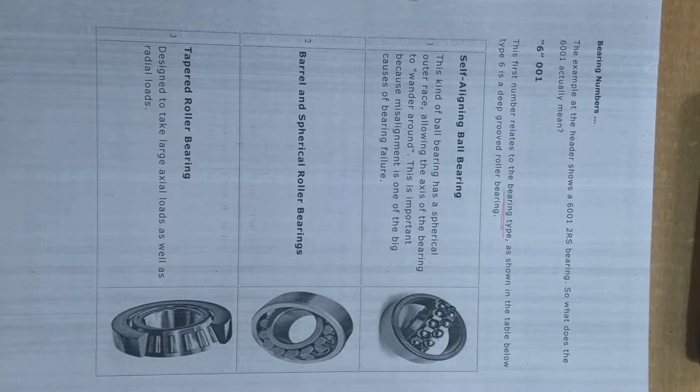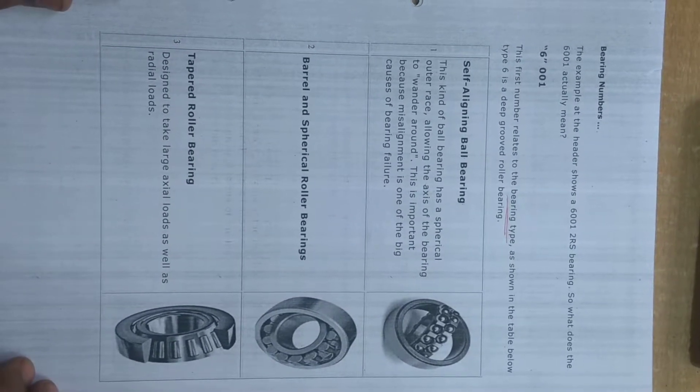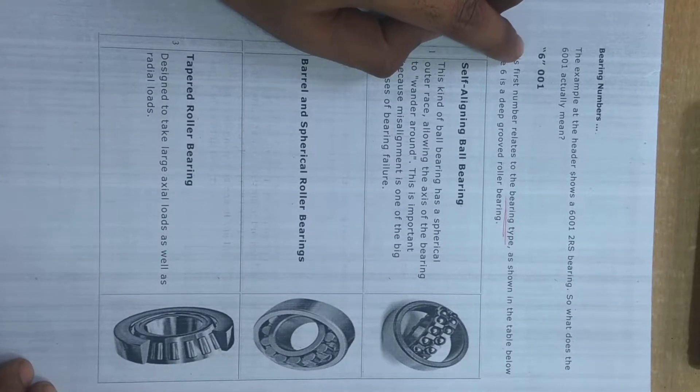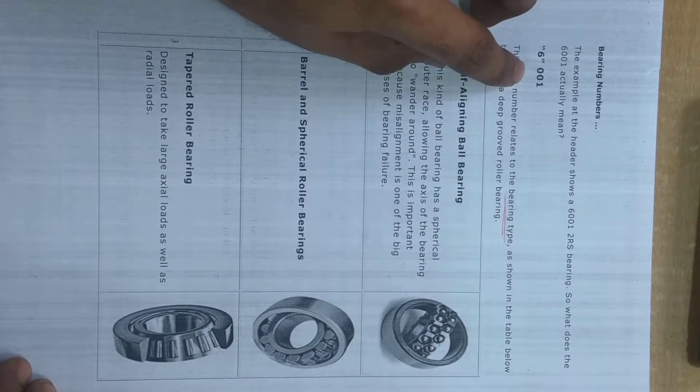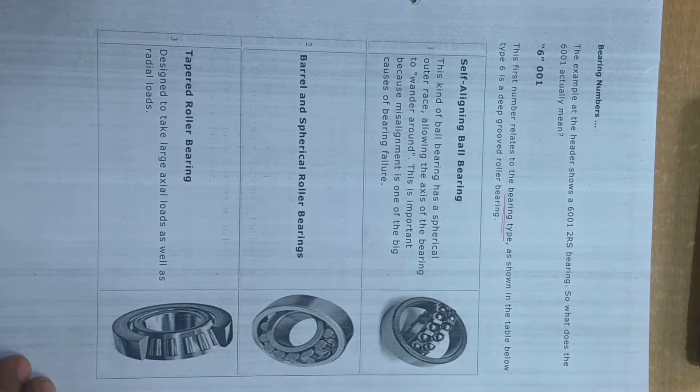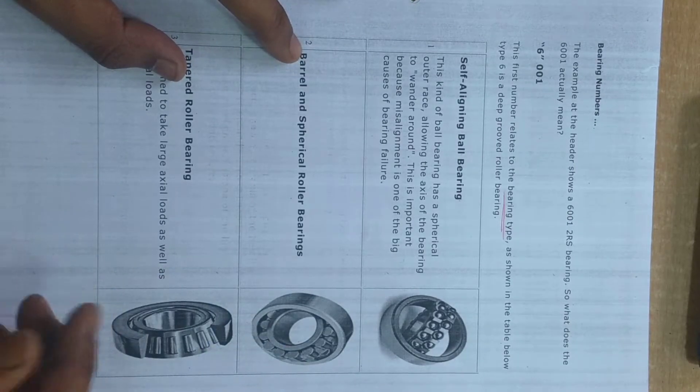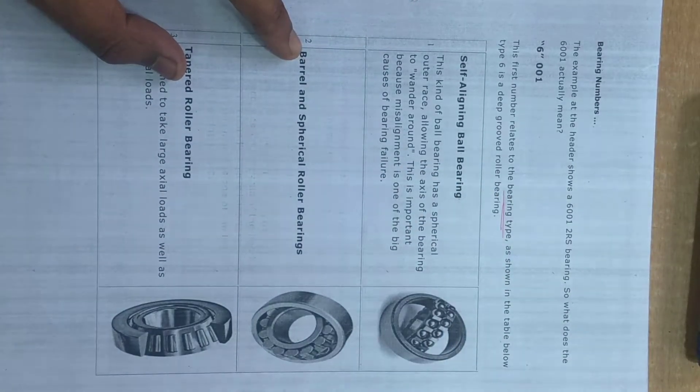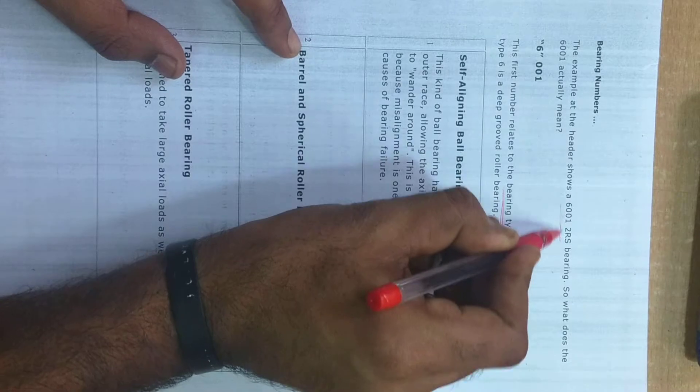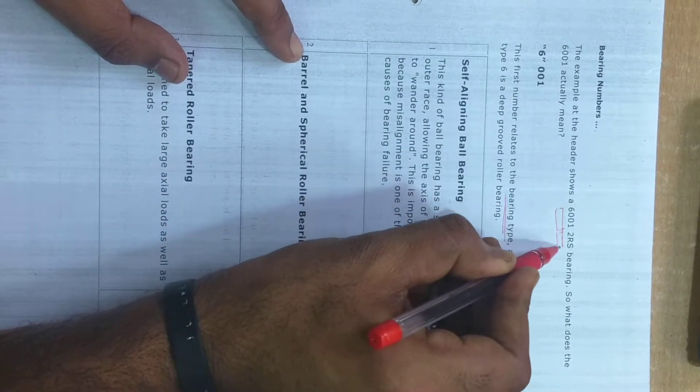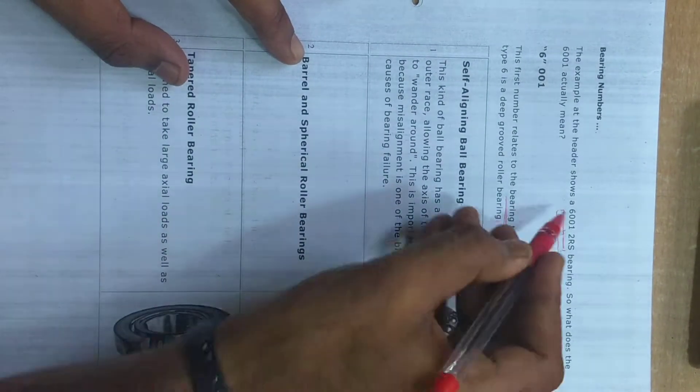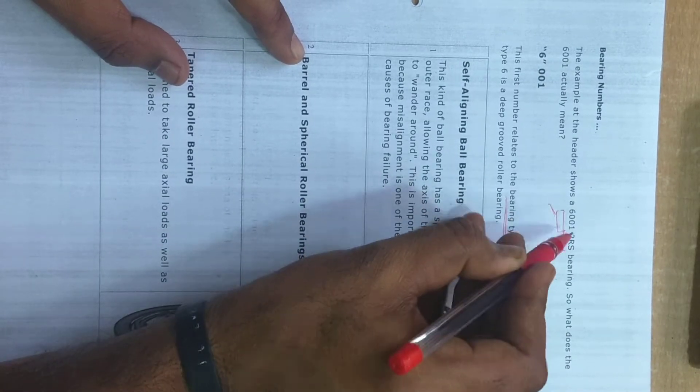Hello everyone, let's talk about bearing today. Bearing generally consists of these four numbers, or in a wider aspect, 6001 2RS. This is the main number and this is the suffix. We'll talk about it later. First, let's deal with the first four numbers.